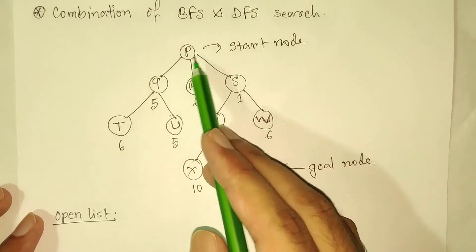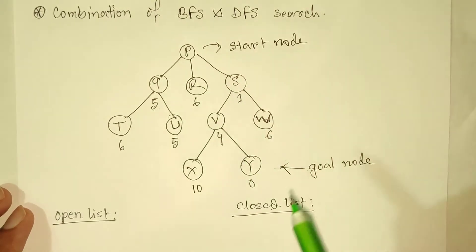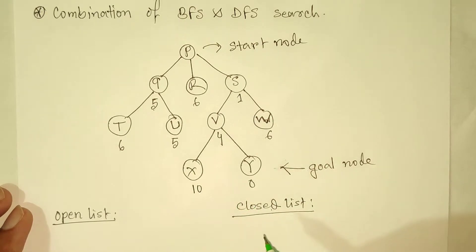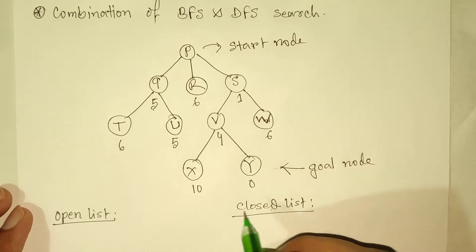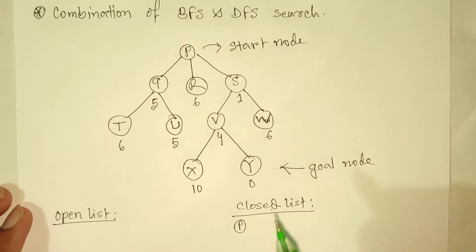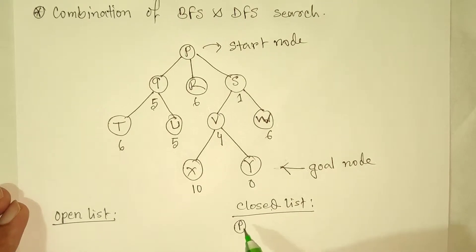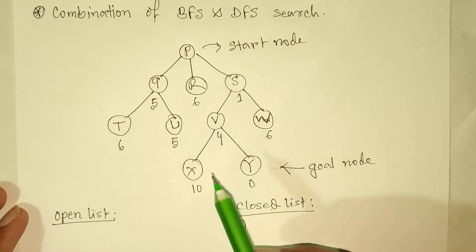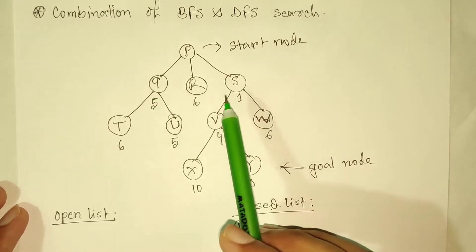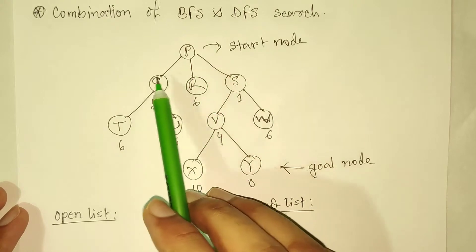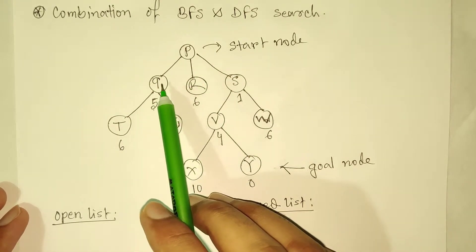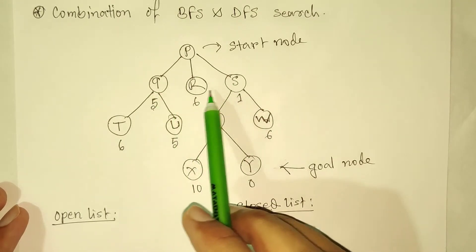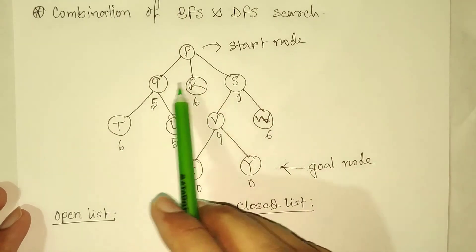First we have to visit node P. After visiting P we add it into our closed list, since every visited node is added to the closed list. Now we check whether P is our goal node — it is not, because our goal node is Y. So we have to perform the algorithm further. We look at the successors of P: we can go to Q, R, and S, so we have to add these three nodes into our open list.